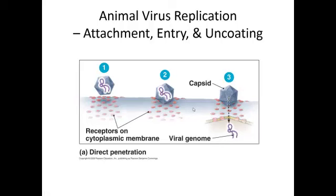Because animal cells do not have a cell wall, animal viruses have a variety of ways that they can enter into the cell. First, let's talk about direct penetration. This is just like bacterial phages — they attach to the receptors on the cytoplasmic membrane, and the viral genome is injected into the cell; the capsid is left on the outside. An example of a virus that does this is poliovirus.